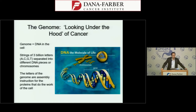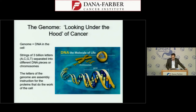A key way we understand the biology of any cancer is by looking at the genome. Every cell in our body has DNA inherited from our parents, split into 23 pairs of chromosomes — strings of billions of letters, A, C, G, and T. These are essentially the cookbook for building all the proteins in the cell that do the work of the cell.